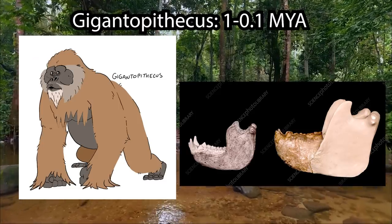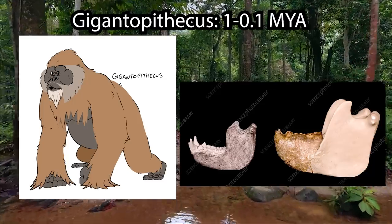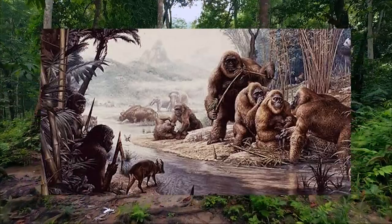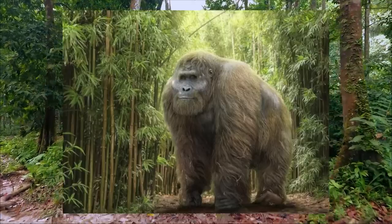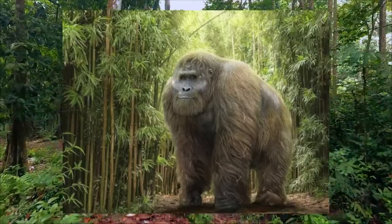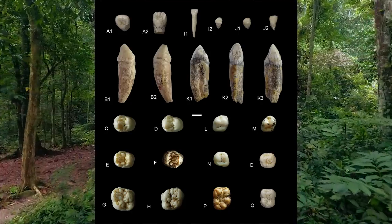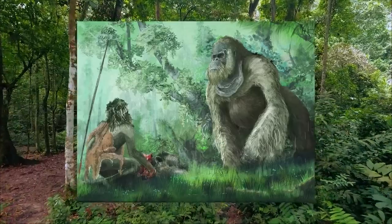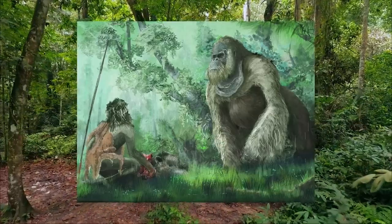Of course, we would be remiss to discuss the Asian apes and not mention the mighty Gigantopithecus. This enormous ape was 3 times the size of a modern male silverback gorilla. We know it primarily from jaws and teeth, the molars of which reveal its diet: Gigantopithecus primarily ate bamboo, but cavity frequency suggests sweet fruits were also on the menu whenever possible. It was evidently sexually dimorphic, but not particularly so in the canine teeth, suggesting males may have competed using larger body sizes instead. This ape lived from 1 million years ago to a mere 100,000 years ago, meaning members of our own species may have encountered this massive cousin.